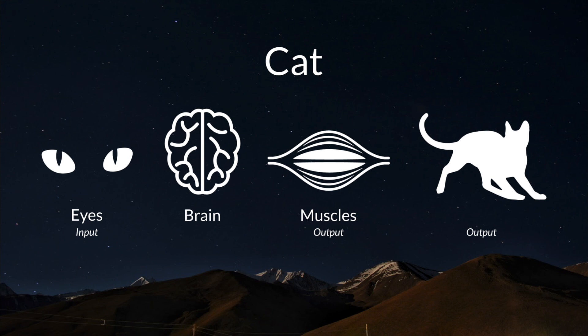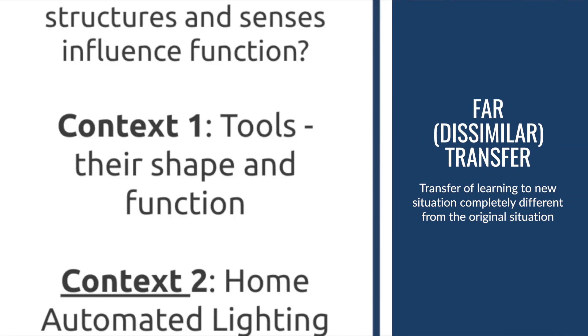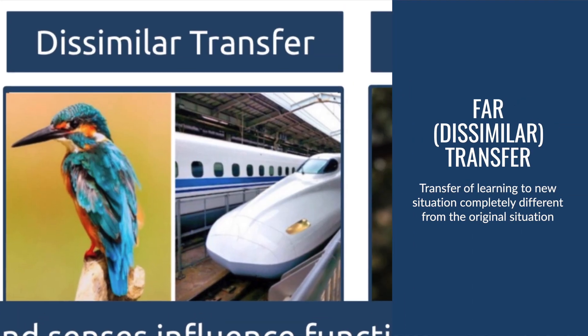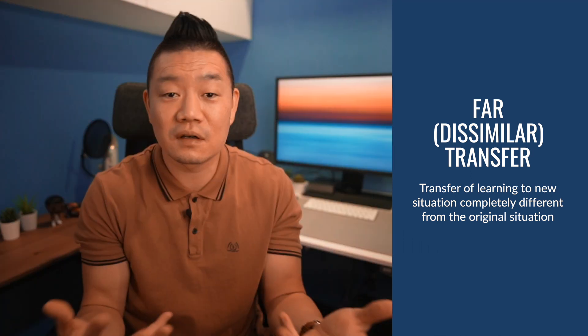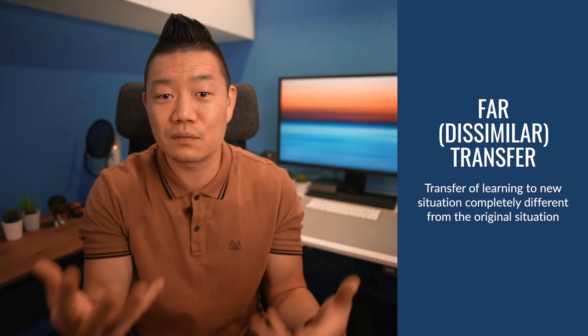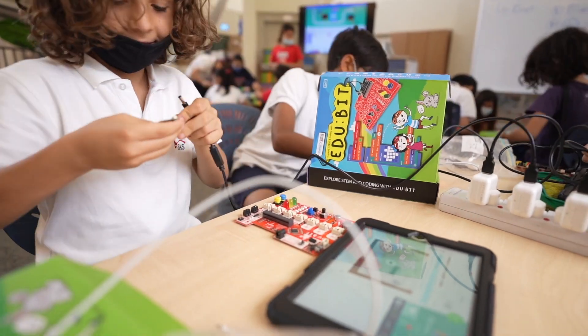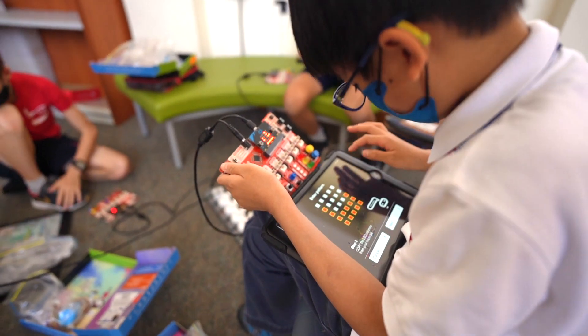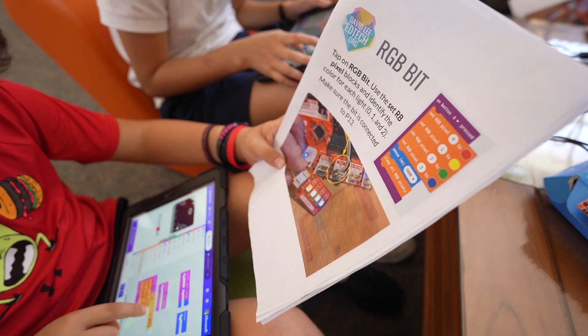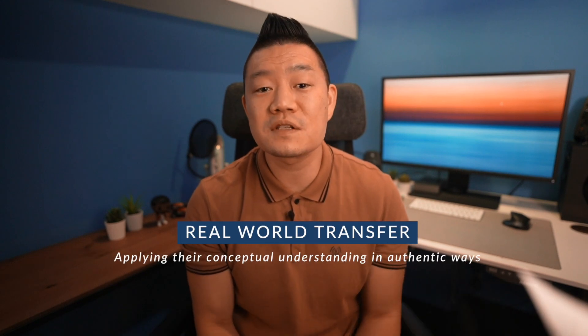Far transfer, or dissimilar transfer, is the transfer of learning happening in a new situation that is completely different from the original situation where students learned the concepts and conceptual relationships. As students are introduced with more and more contexts, the transfer of learning should become more dissimilar as well as involve more real-world scenarios.